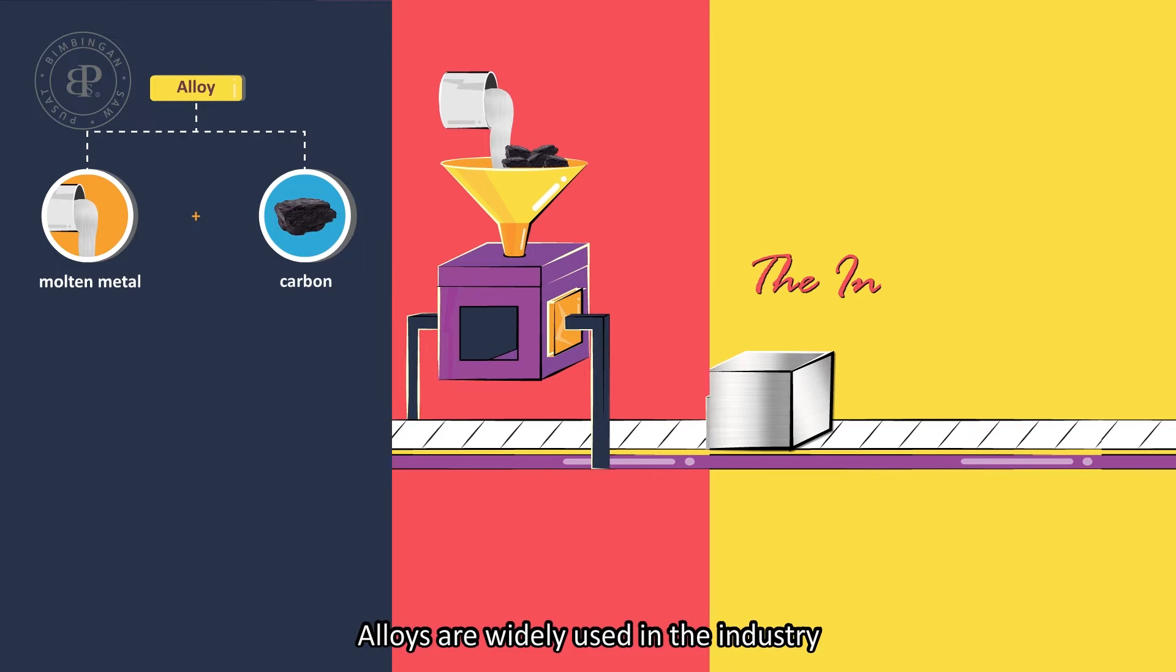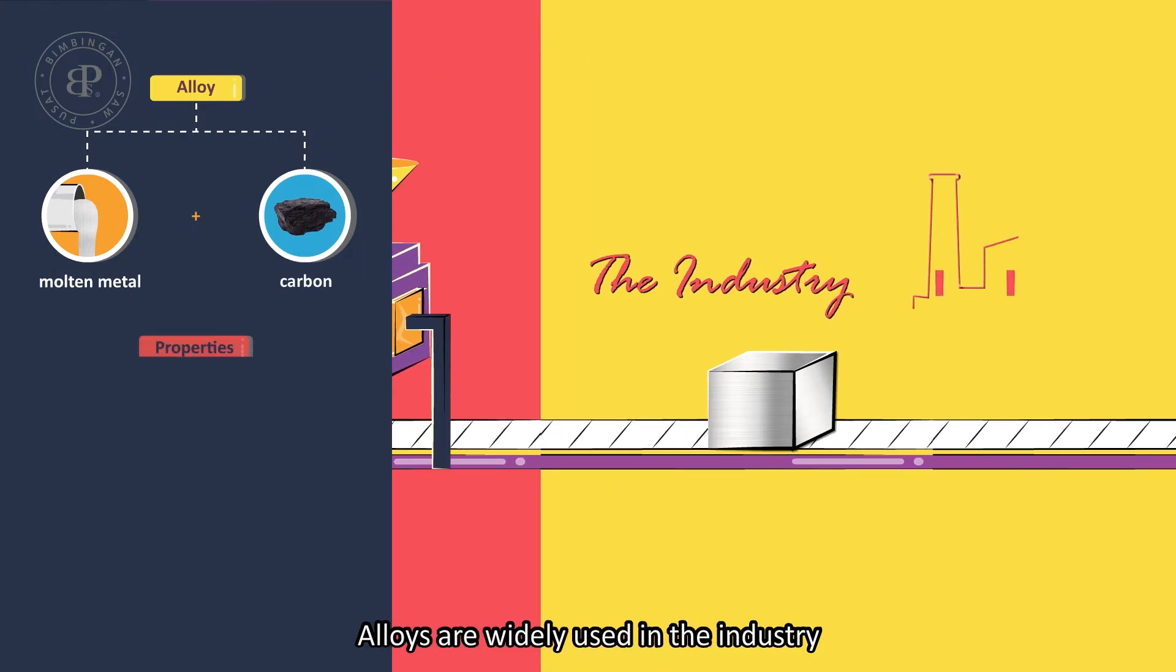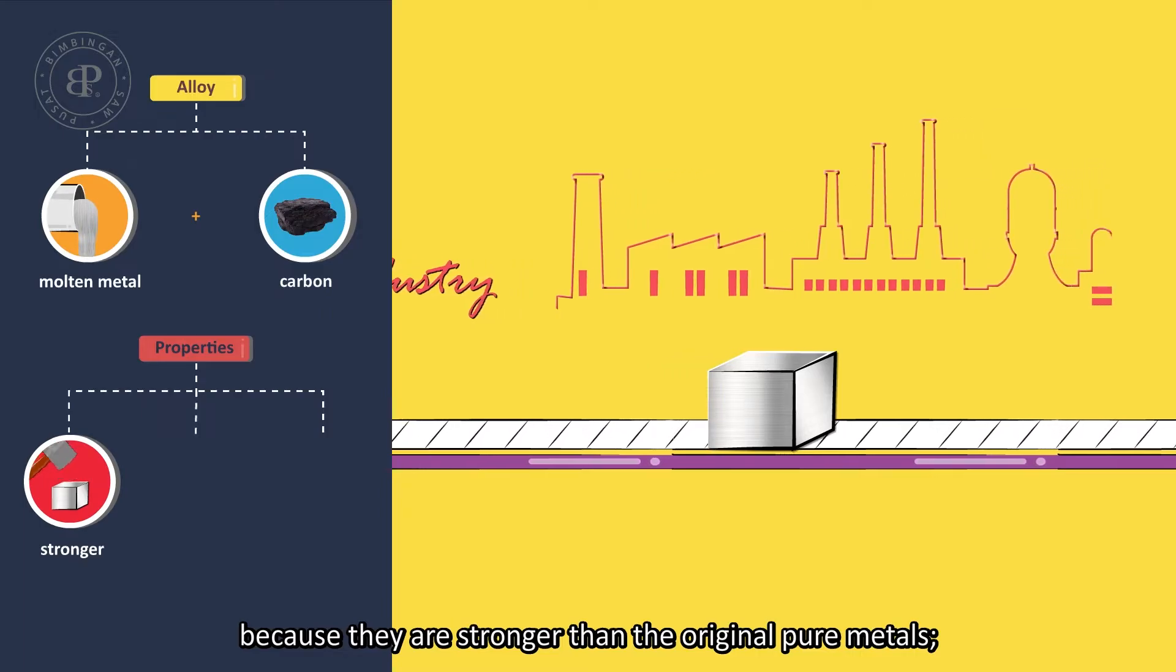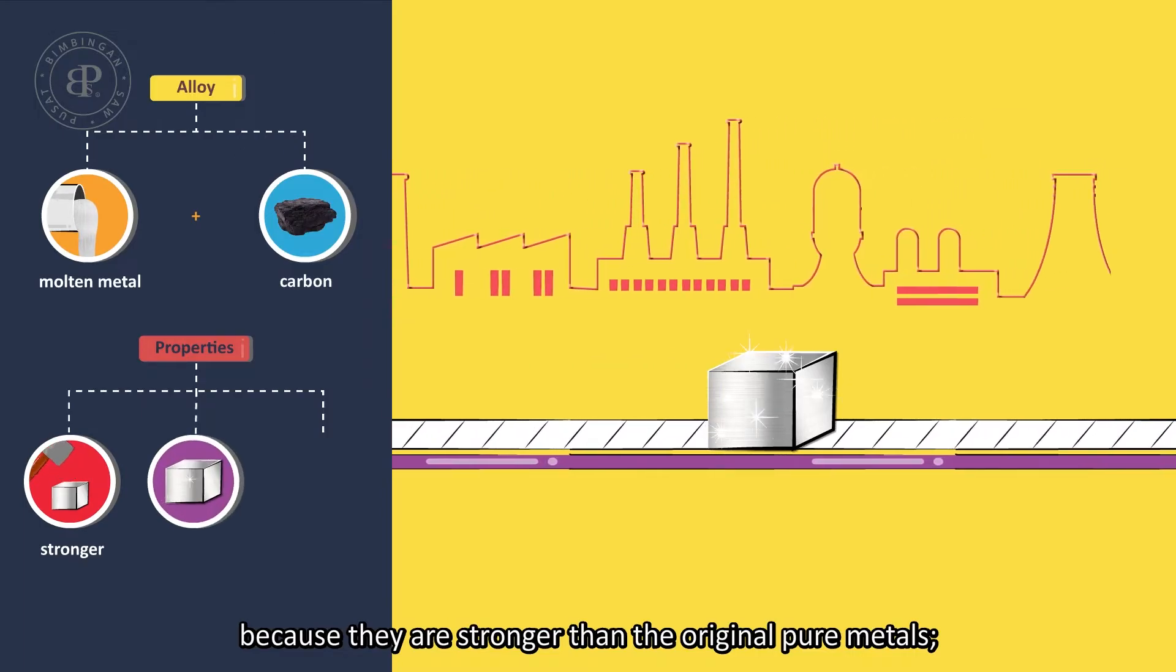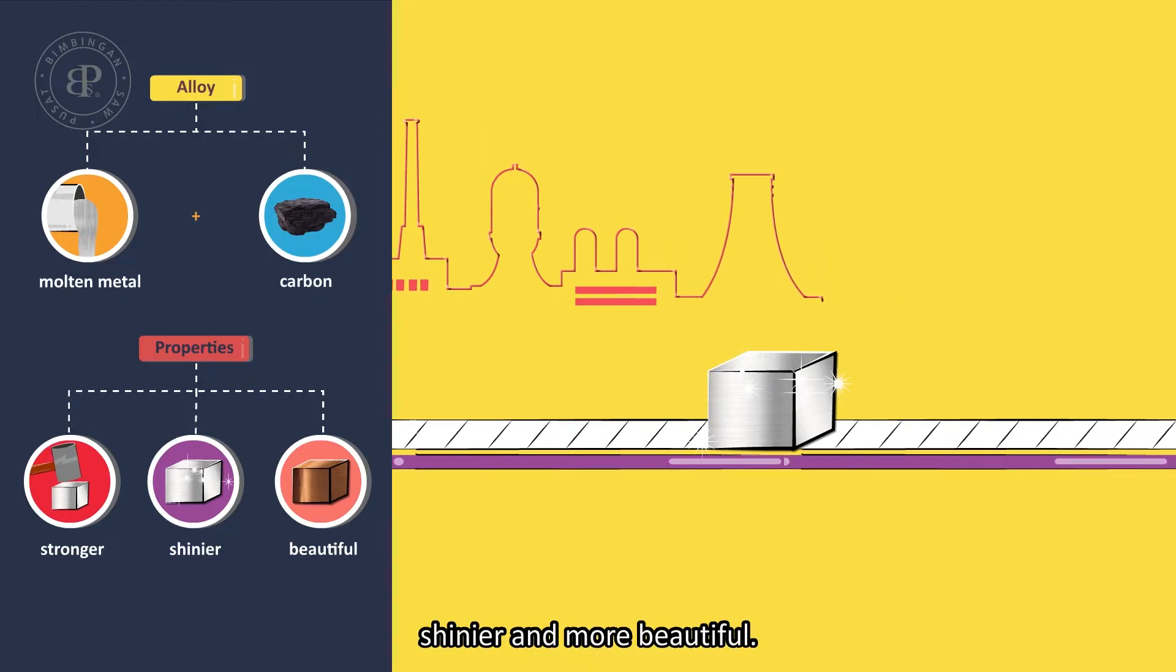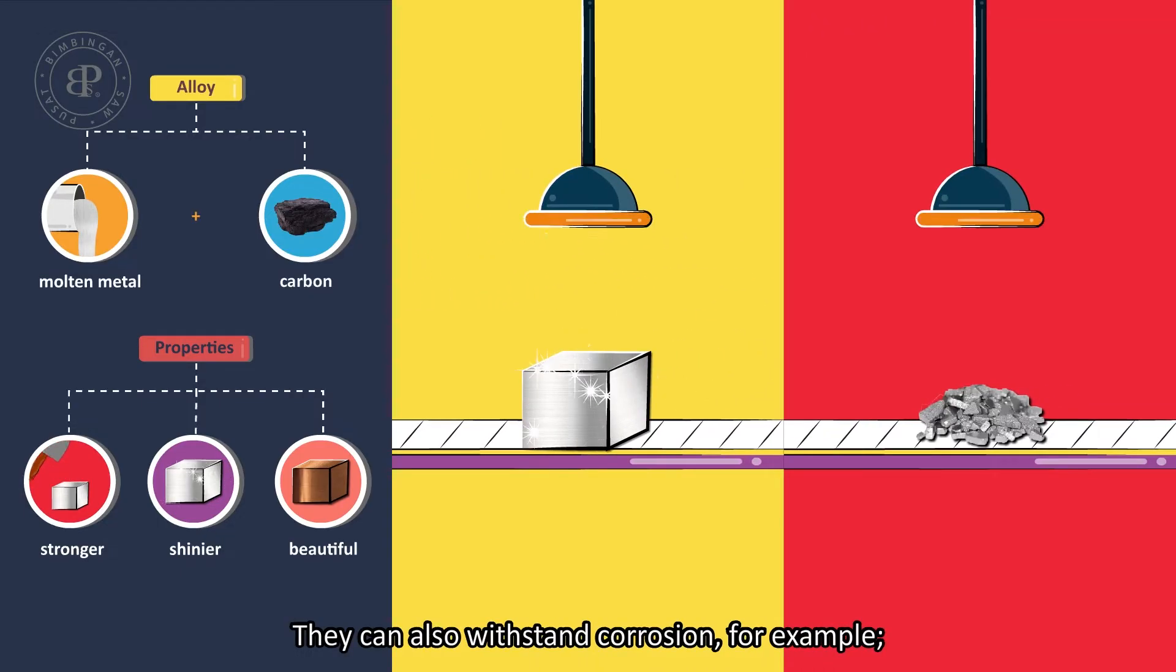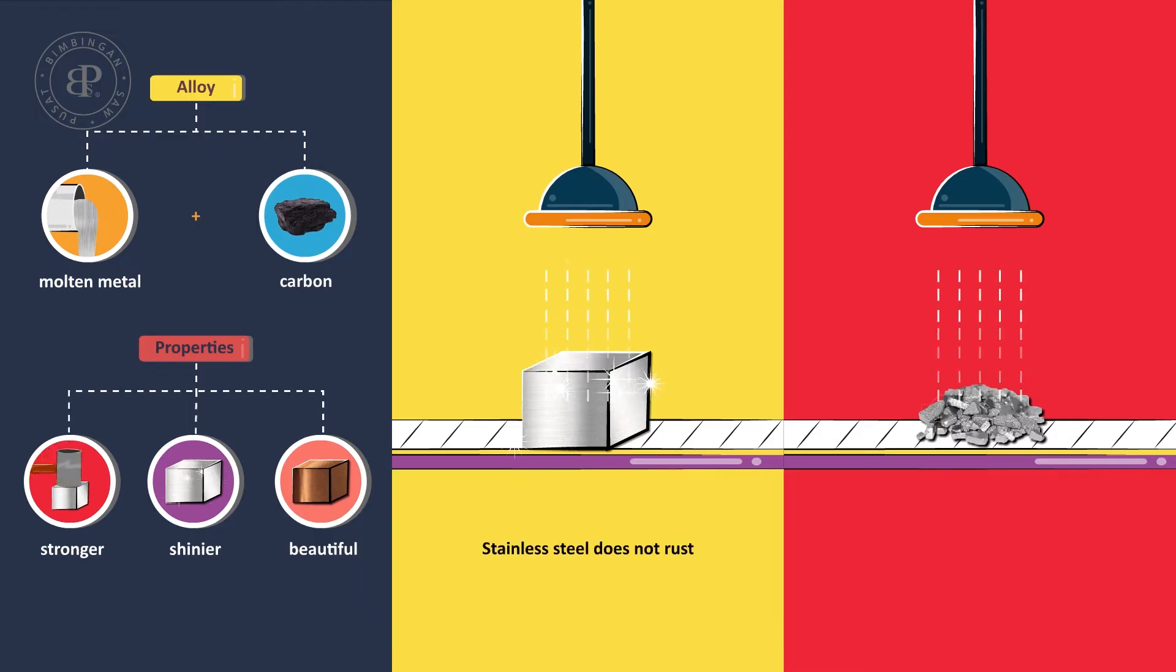Alloys are widely used in the industry because they are stronger than the original pure metals, shinier and more beautiful. They can also withstand corrosion. For example, stainless steel does not rust, whereas iron rusts easily.